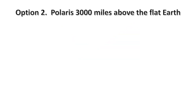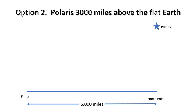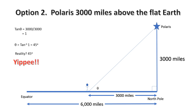Option two: we put Polaris at 3,000 miles above the flat Earth. There's a reason I chose 3,000 miles, and you will see that very shortly. Let's draw our flat Earth again — North Pole and the equator, 6,000 miles from North Pole to equator, and Polaris at 3,000 miles. We put our little guy 3,000 miles away from the North Pole. Tangent of theta equals 3,000 divided by 3,000, which equals 1. Theta is the inverse tangent of 1, which is 45 degrees. And in reality, it is 45 degrees. Yippee! We seem to have a match.